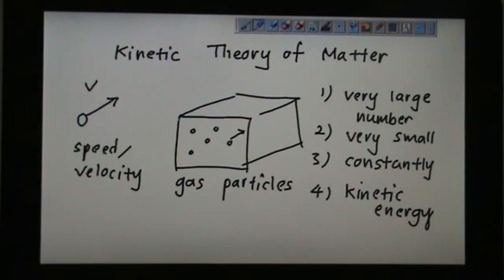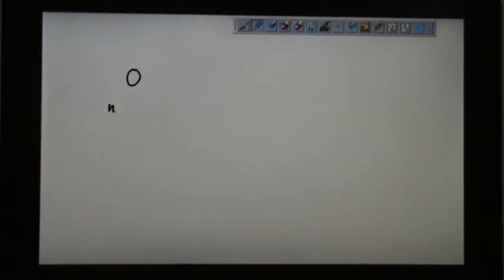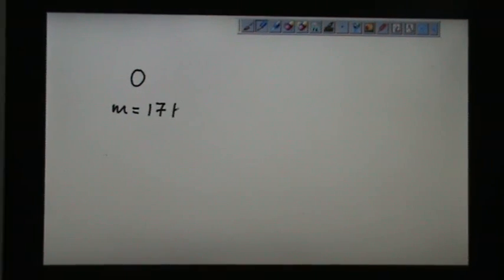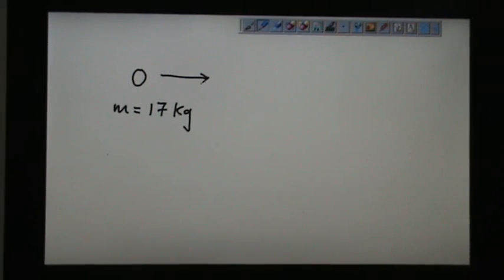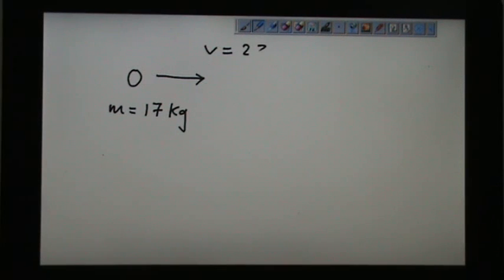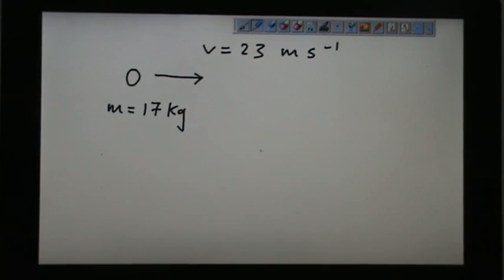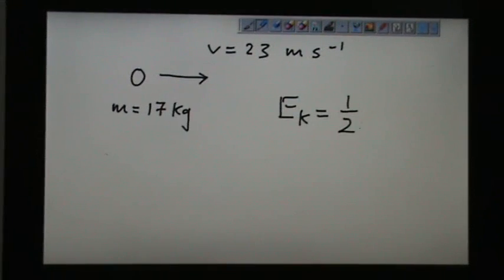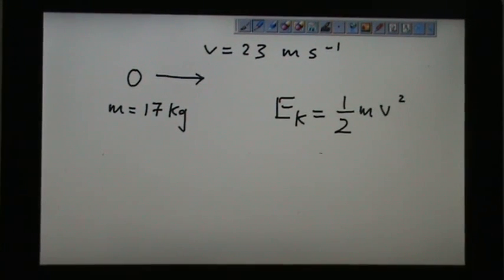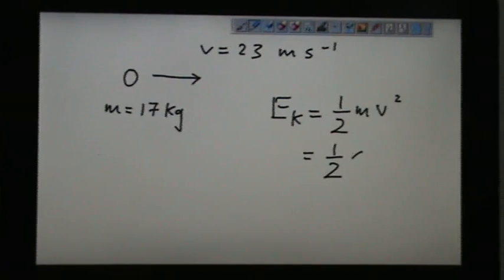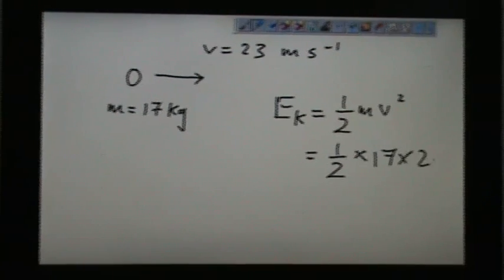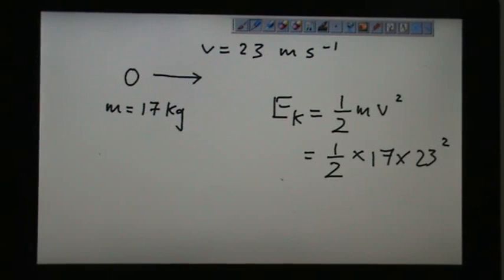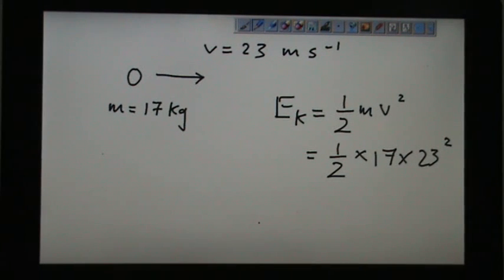So let's try one example. If an object having mass 17 kg and is moving with velocity 23 meter per second, the formula for kinetic energy is half mv squared. So you can do some calculation. Half times 17 times 23 squared. So the answer is whatever answer you press, the answer you get from your calculator.